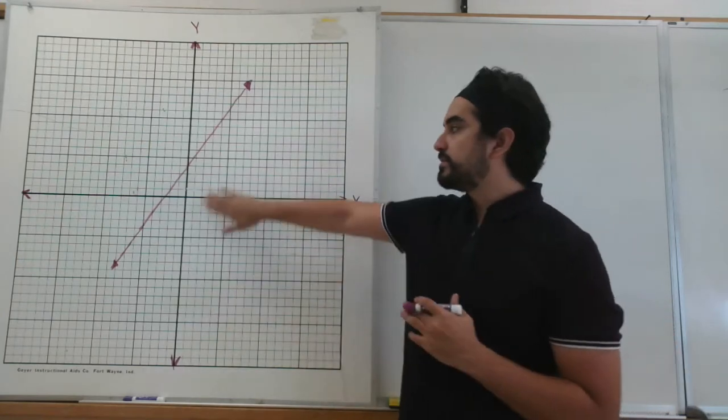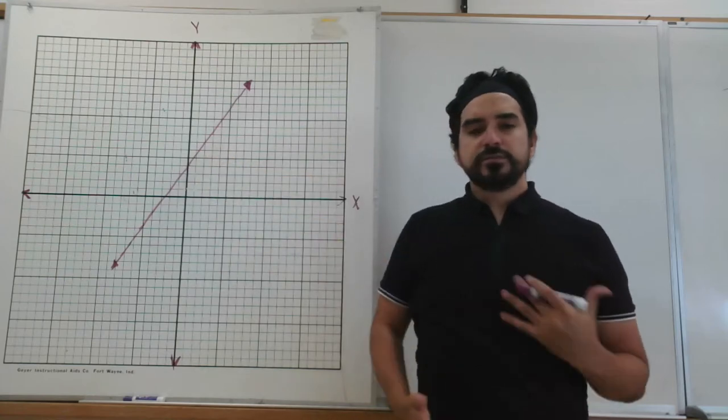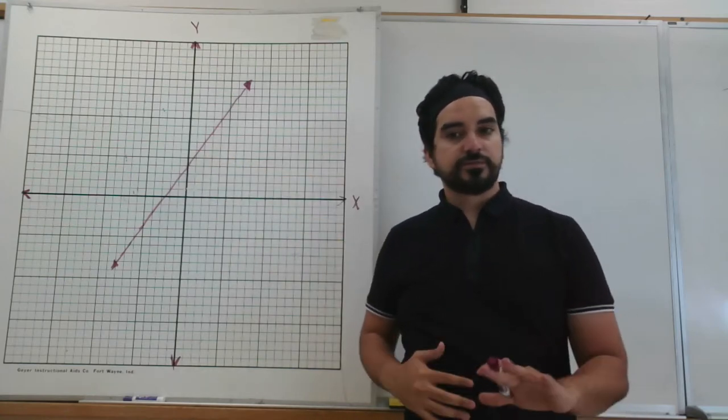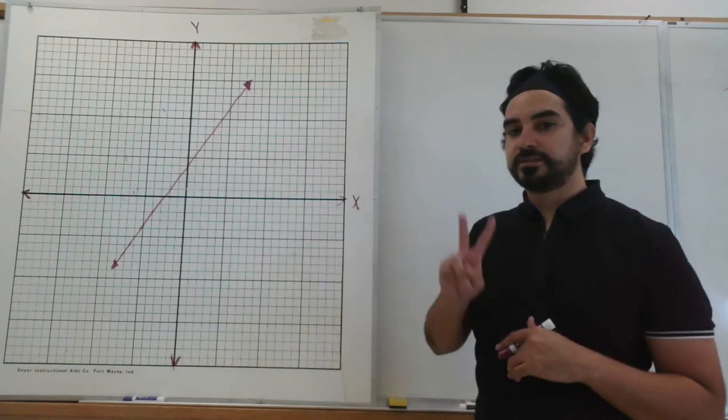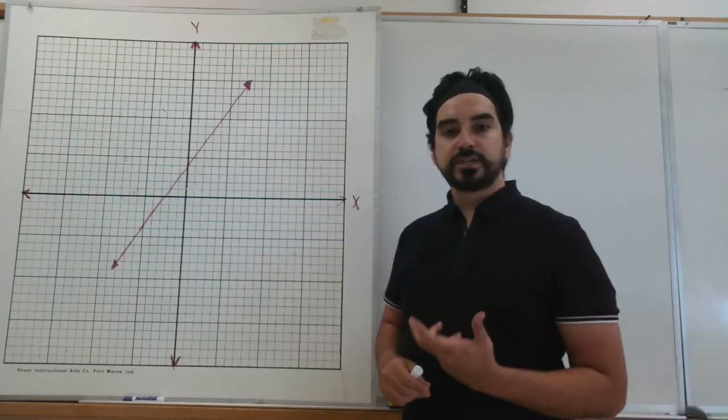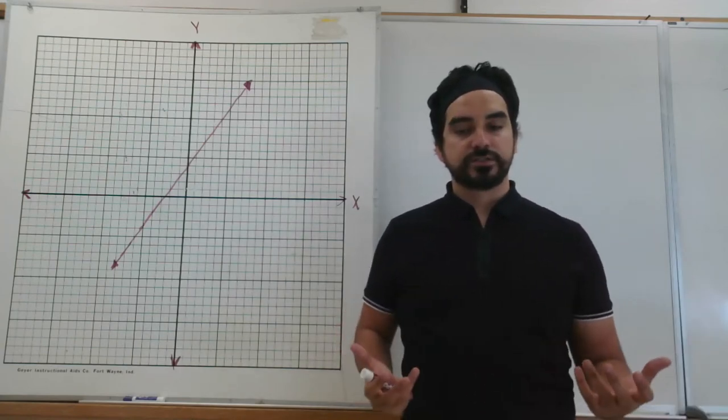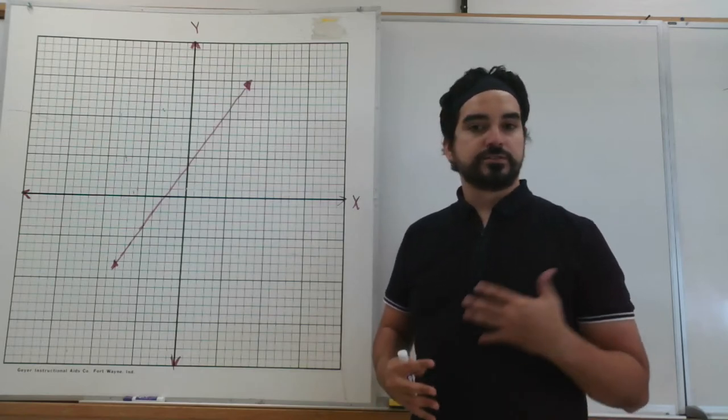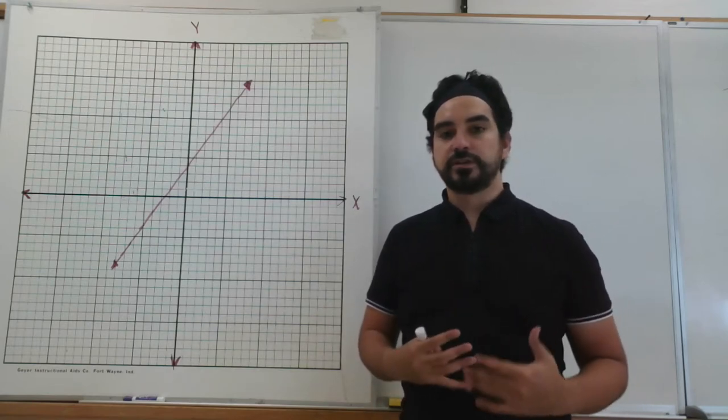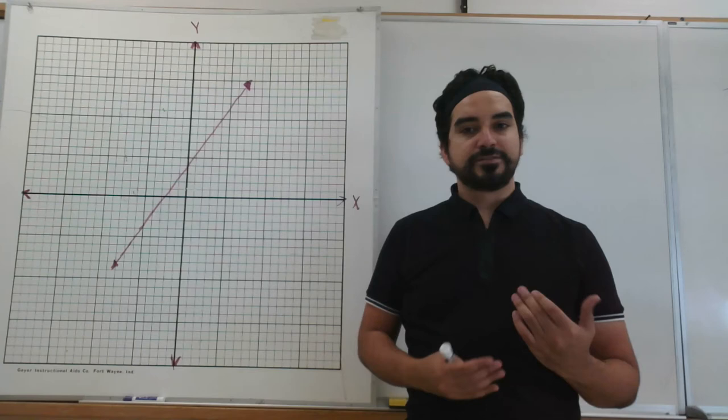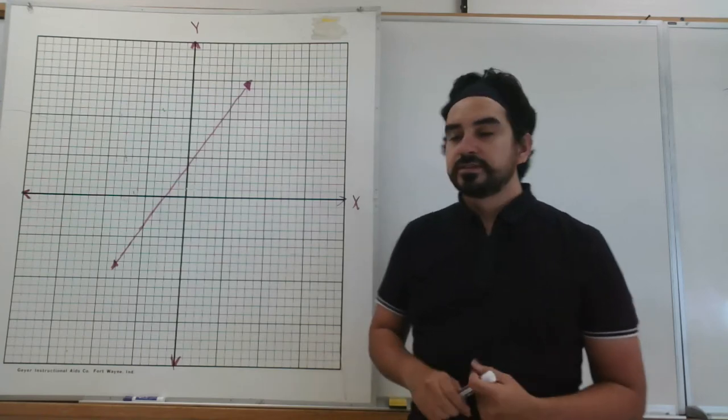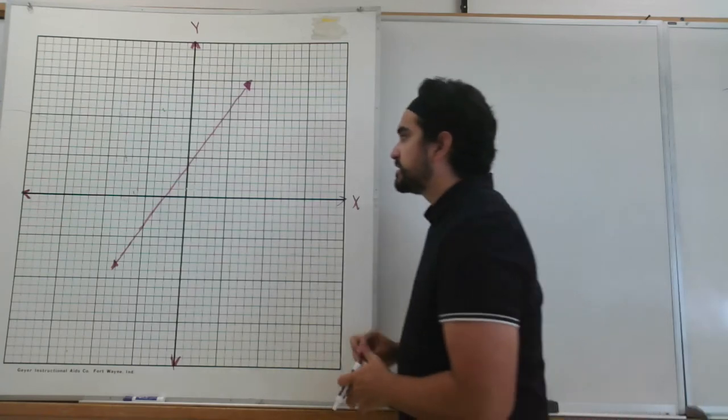So we have our graph. The first thing we need to do is find two bullseye points. You can find more if you want, but we're trying to find two. Remember, bullseye points have to be whole integers. So what that means, it has to be 1, 3, 4. I do not want no decimals. So let's go ahead and get started.